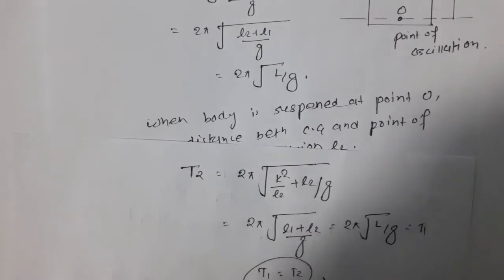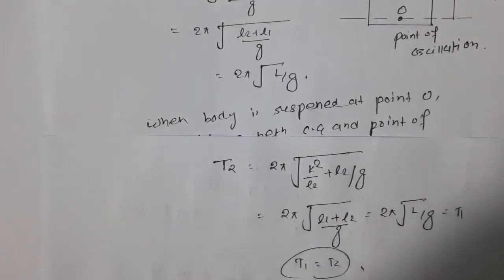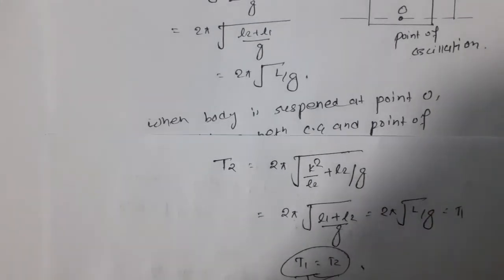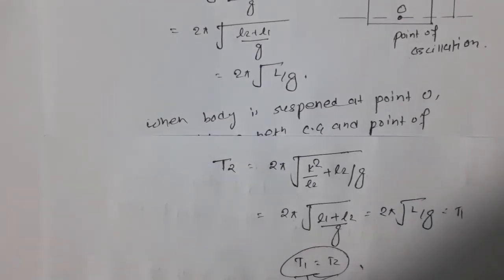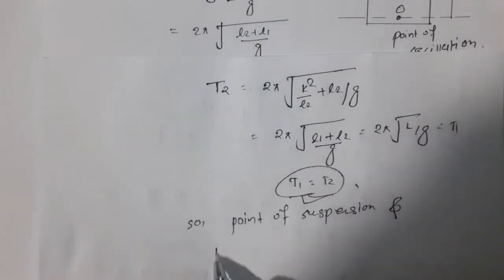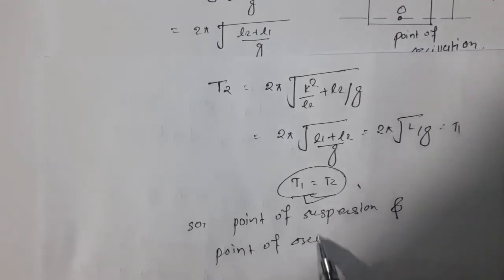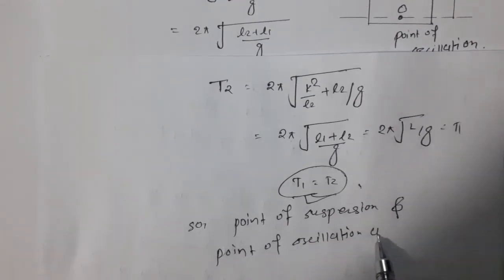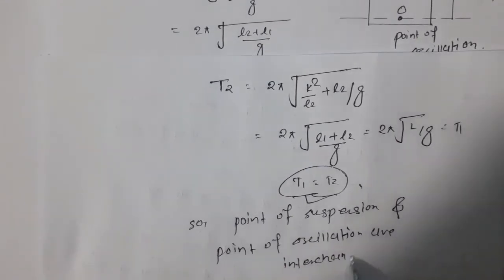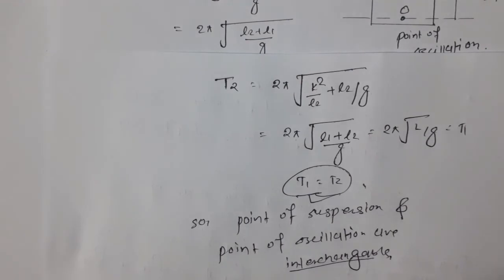This is equal to T1, so T1 equals T2. This means if the point of suspension and point of oscillation are interchanged, the time period remains the same. We conclude that the point of suspension and point of oscillation are interchangeable, because if we interchange them the time period is the same in both cases.